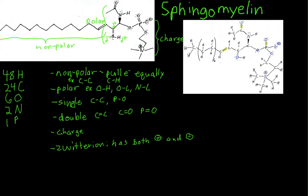One type of bond I did not talk about is an ionic bond. An example of that is in table salt, NaCl. In an ionic bond, the chlorine takes the electron from the sodium, which leaves the chlorine with a negative charge and the sodium with a positive charge. We call that an ionic bond, as opposed to the covalent bond we were talking about earlier.